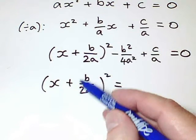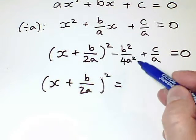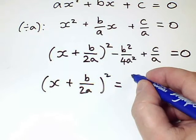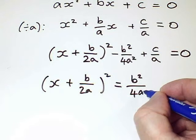Ok, to end up with just this squared bracket on this side, I need to add this term that's currently being subtracted to both sides. So I'm going to get plus b squared over 4a squared.